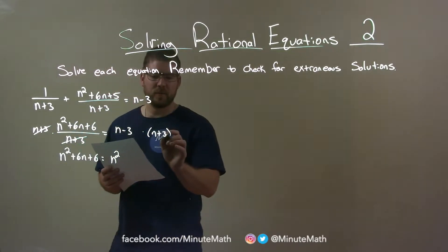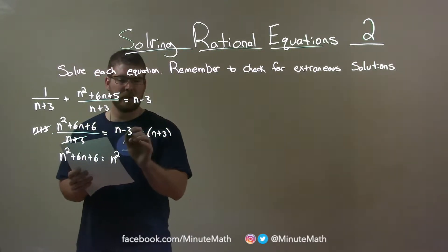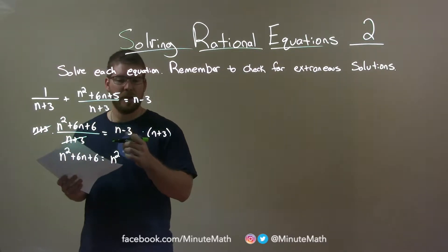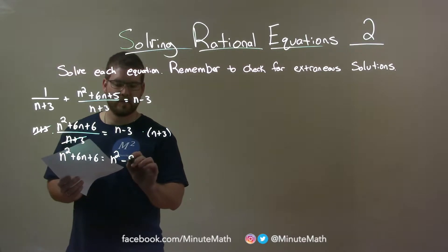And then n times 3 is 3n, and minus 3 times n is minus 3n. They cancel, don't really worry about that, minus 3 times 3 is minus 9.